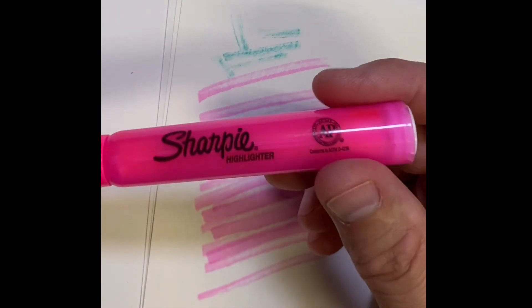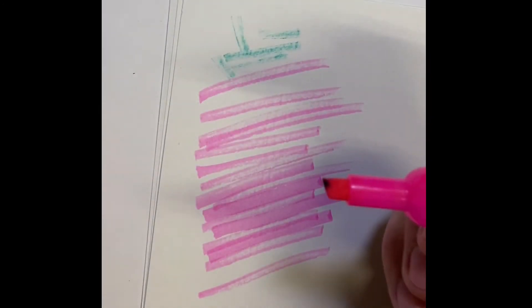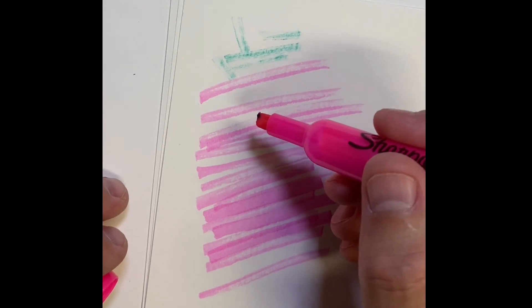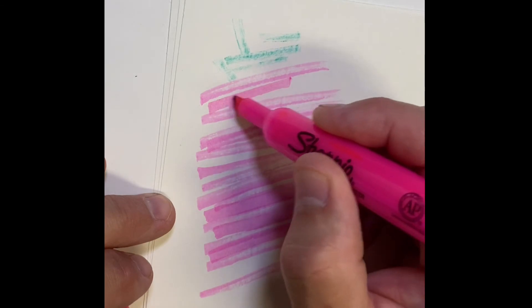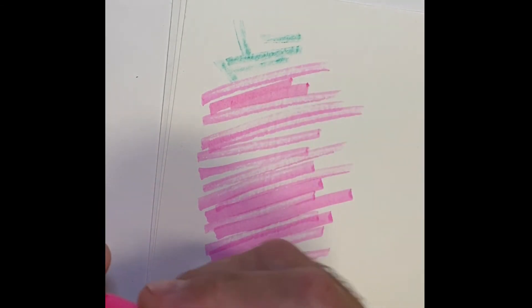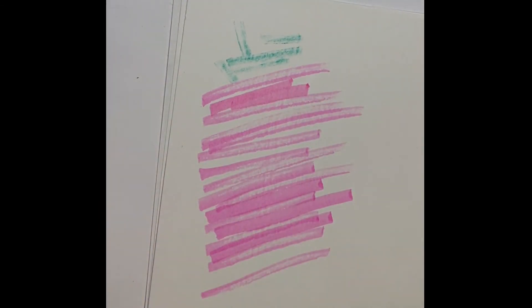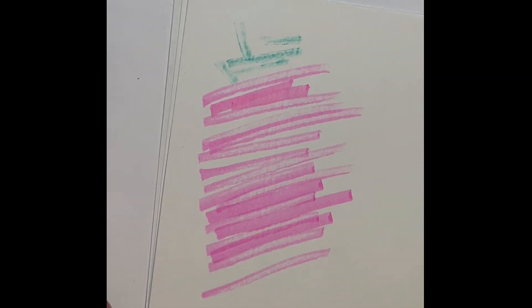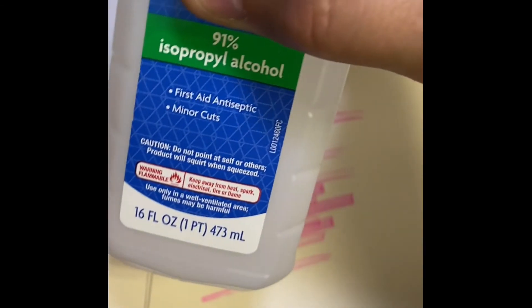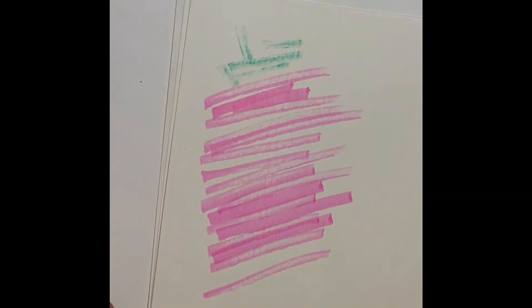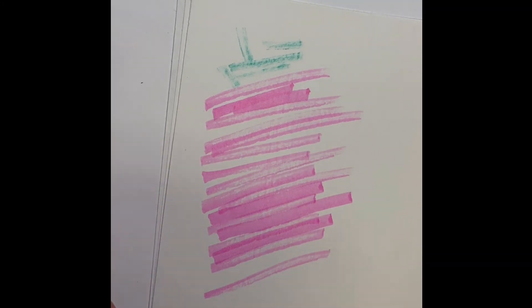But I'll tell you, this was absolutely the success. It was a partially worn out highlighter, and it now absolutely works wonderfully. So that was 20 drops of 91% isopropyl alcohol. It really did help revive this Sharpie.